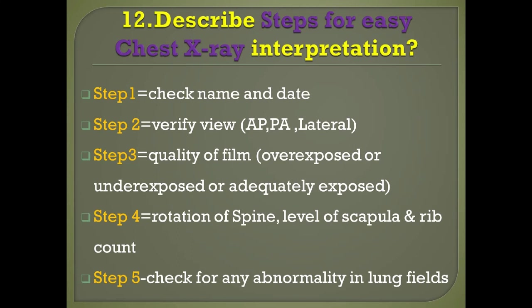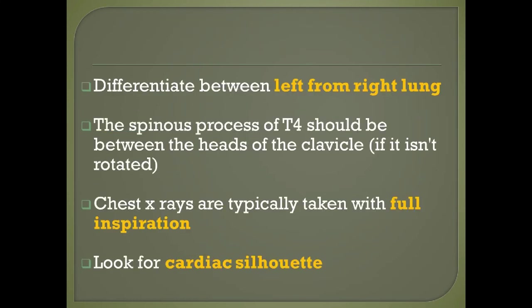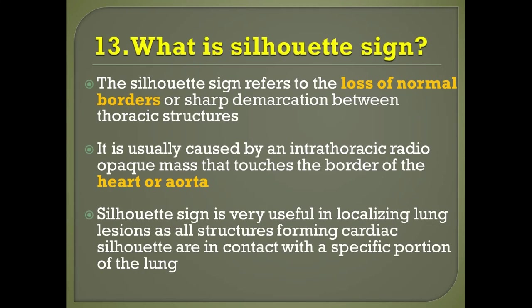Question number twelve: describe the steps for easy X-ray interpretation. Step one: check the name and date. Step two: verify the view — whether it is AP, PA, or lateral. Step three: check quality of the film — whether it is over-exposed, under-exposed, or adequately exposed. Step four: check rotation of the spine, level of scapula, rib count, etc. Step five: check for any abnormality in the lung fields. Always differentiate the left from the right lung. The spinous process of T4 should be between the medial ends of the clavicles if the film is not rotated. Chest X-rays are typically taken with full inspiration.